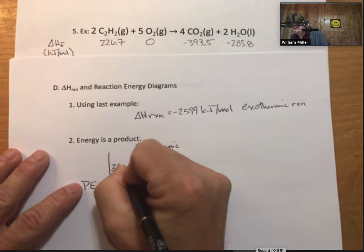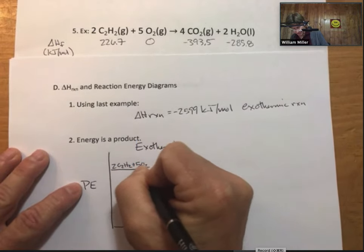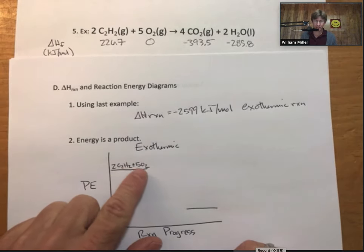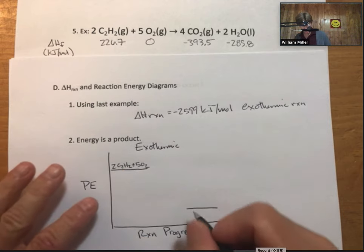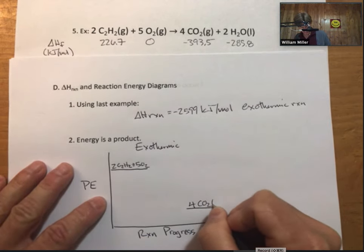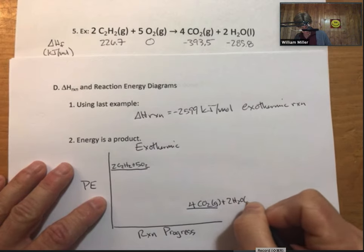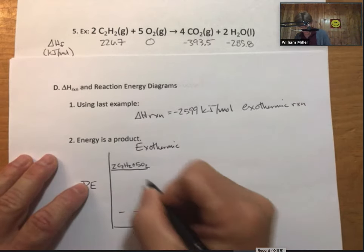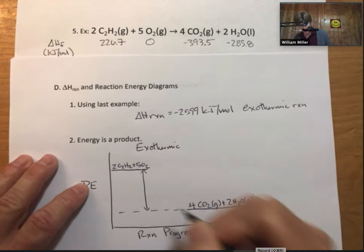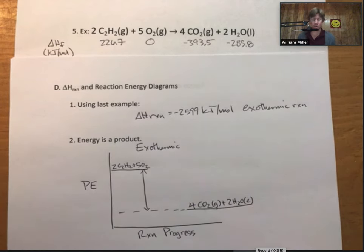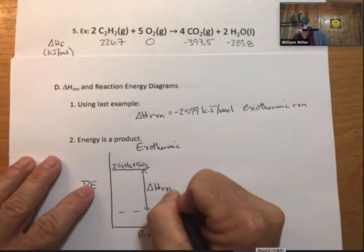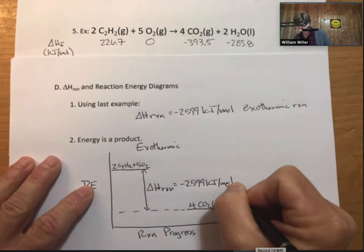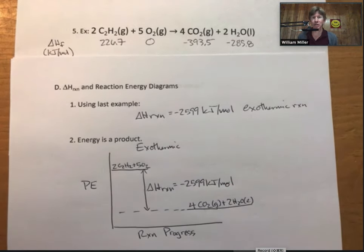2 C2H2 plus 5 oxygen. As you go from the potential energy stored in the bonds here to the potential energy stored in the bonds of the products, the difference in the potential energy is going to be equal to delta H reaction. Minus 2599 kilojoules per mole.